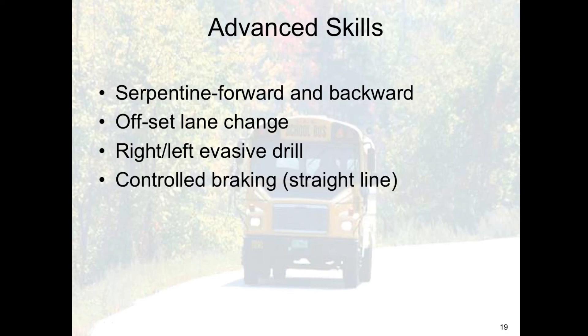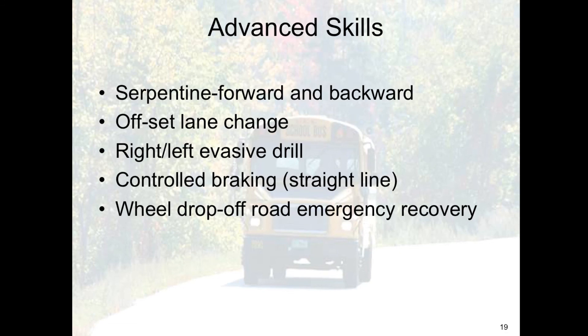Controlled braking is done in such a way to maintain a straight line, on a closed course. You accelerate in a straight line to about 30 to 35 miles an hour, and on the trainer's command, you brake sharply. Release and reapply if necessary to avoid skidding. Make a smooth stop, stopping as near the end of the lane as possible. Wheel drop-off and emergency road recovery: center the edge of the road under the vehicle. Grip the wheel at 3 o'clock and 9 o'clock. Steer one quarter to one half turn to re-enter. Don't over-steer and don't scrub tires along the edge of the road.